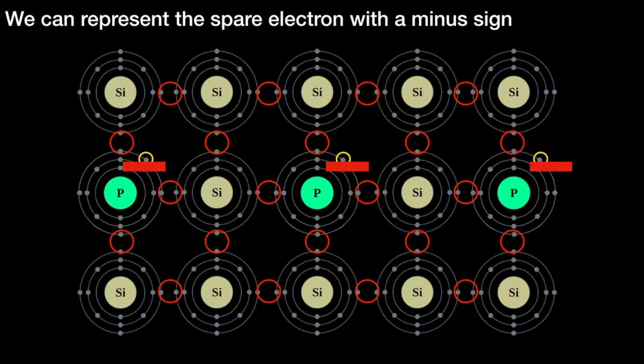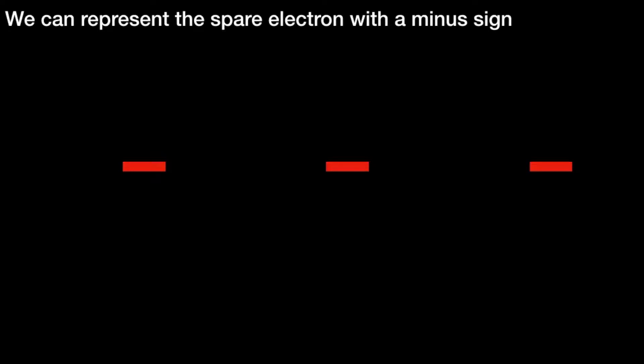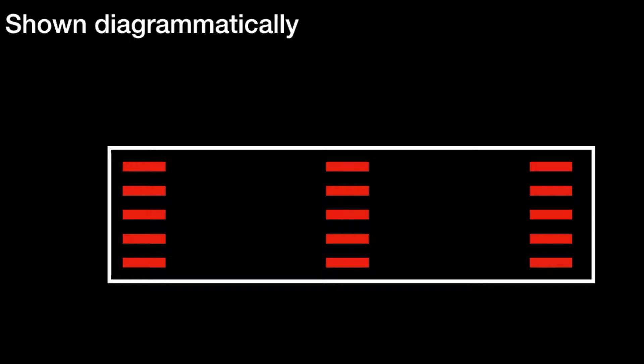We can represent these spare electrons as minus signs because an electron has a negative charge. Sometimes in the textbooks you will see this shown diagrammatically. The minus signs represent the spare electrons. Because it's negative, because it has spare electrons, it's n-type. That is n-type semiconductor material.